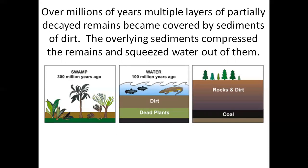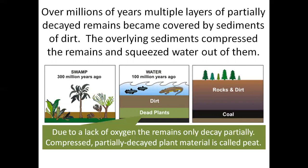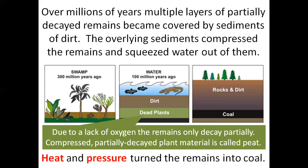Over millions of years, multiple layers of partially decayed remains became covered by sediments of dirt. The overlying sediments compressed the remains and squeezed water out of them. Due to a lack of oxygen, the remains only decay partially. Compressed, partially decayed plant material is called peat. Heat and pressure then turn the remains into coal.